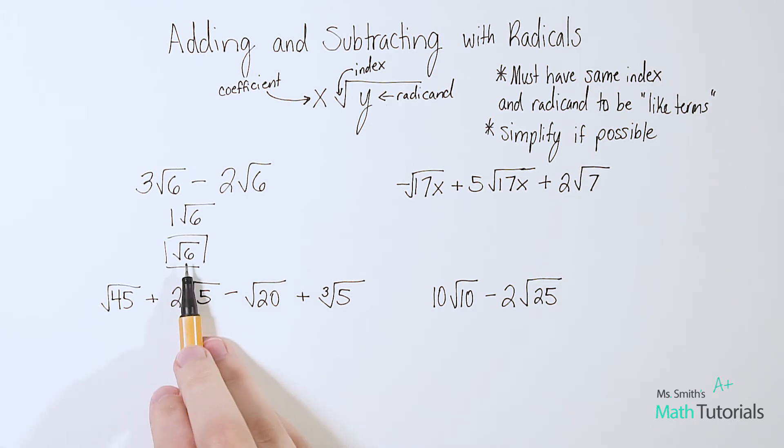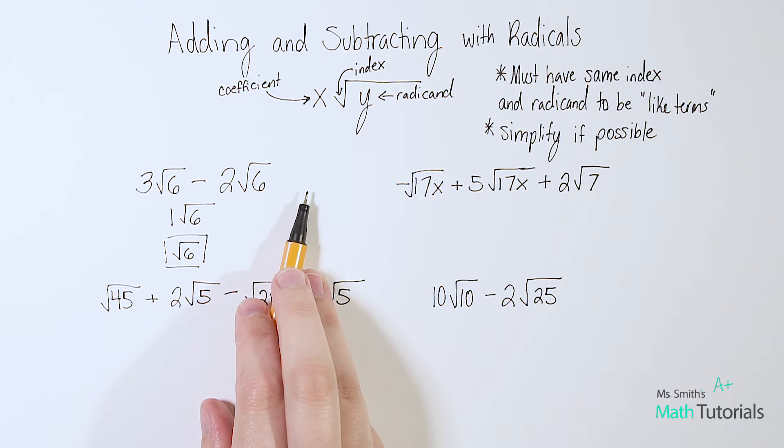Of course, I would want to ask myself, can six be broken down any further? And it cannot. That's the most simplified that radical can get. I could try to do a factor tree over here, would not be able to break it down and pull any pairs out.